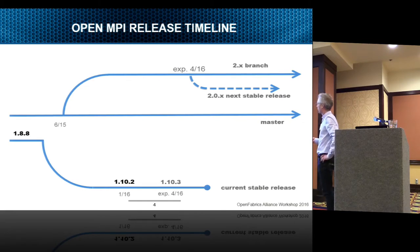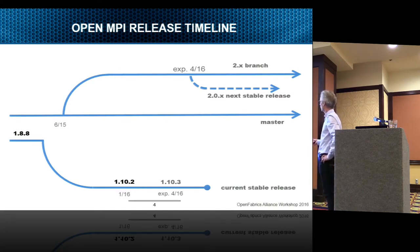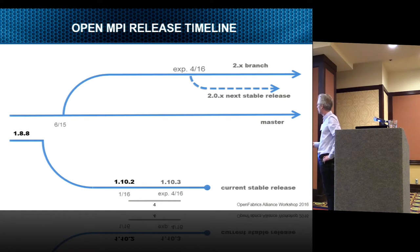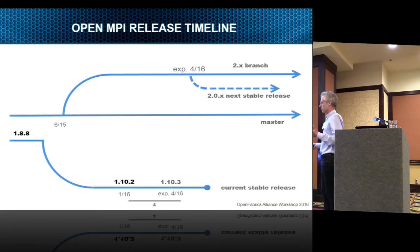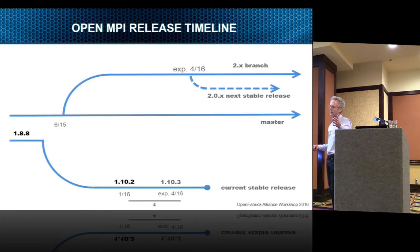I want to talk about our release cycle. Once you get involved in release management, you think about this a lot more than you may have before when you're just writing software. In this diagram, time goes from left to right. About a year and a half ago, some vendors really wanted to get features into the 1.8 release stream, which at the time was the stable release stream. The way we were doing release cycles: 1.x where x is odd was called a feature stream, and 1.x+1 even was the stable stream.